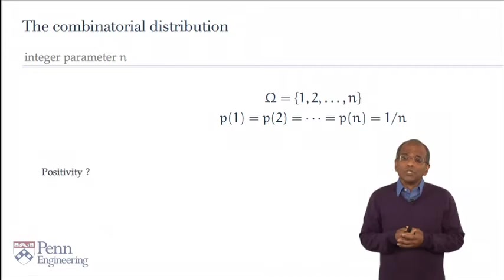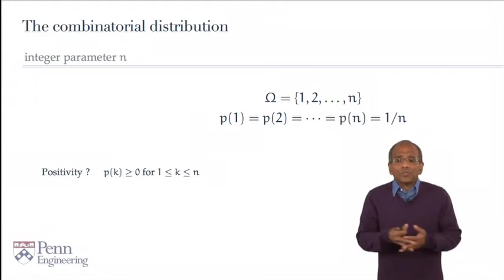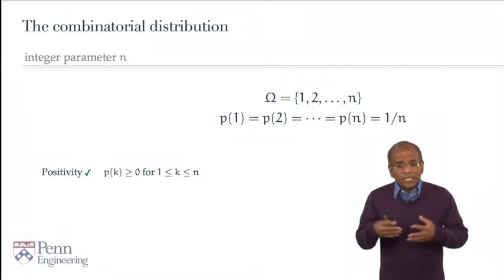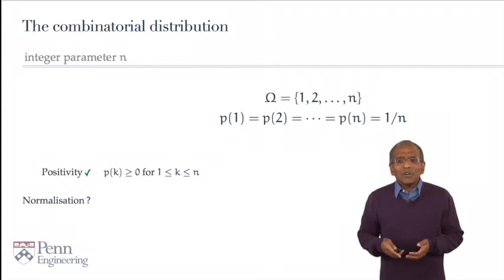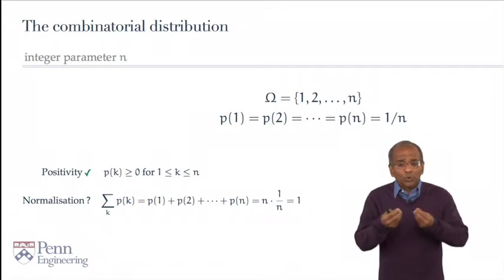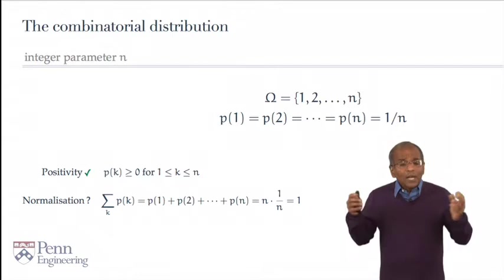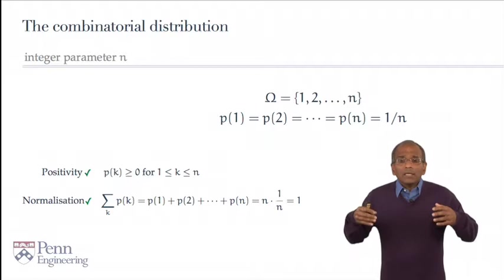The first axiom of positivity. Is the mass function positive? Of course, this is completely trite. The number 1 over n is a positive number for each of the values, 1 through n. So p(k) is manifestly positive. What about normalization? Well, normalization is equally trite. In this case, if I sum the values of p(k), k runs from 1 to n. So I am adding the values p(1) to p(2), all the way up through p(n). But each of these is equal to the same value, 1 over n, and there are n terms in the sum. Therefore, you get n times 1 over n, or 1. And normalization is again tritely satisfied.